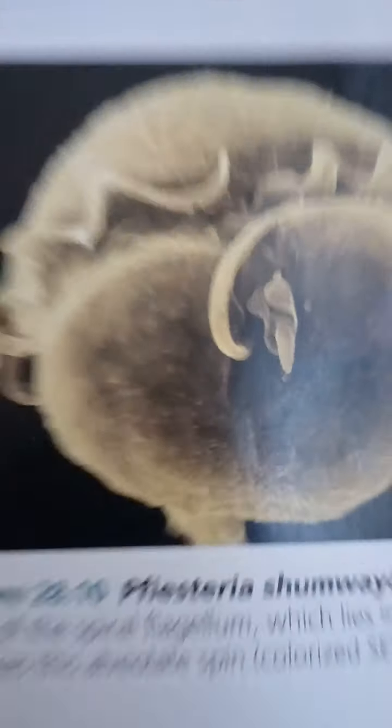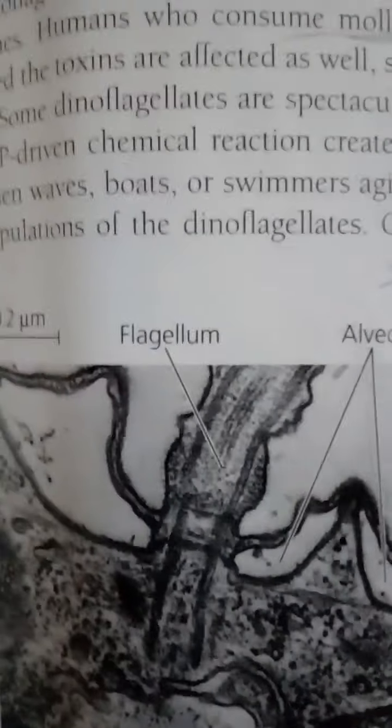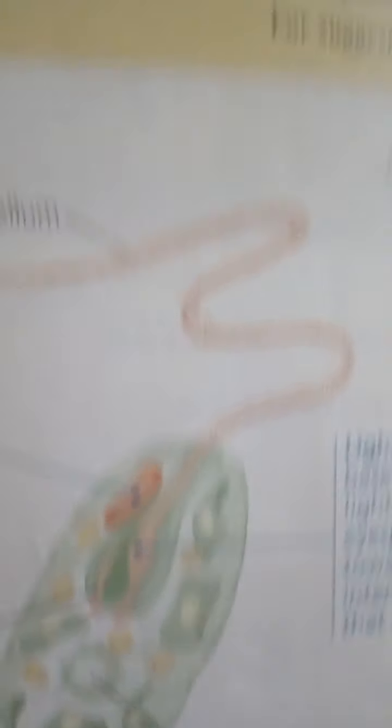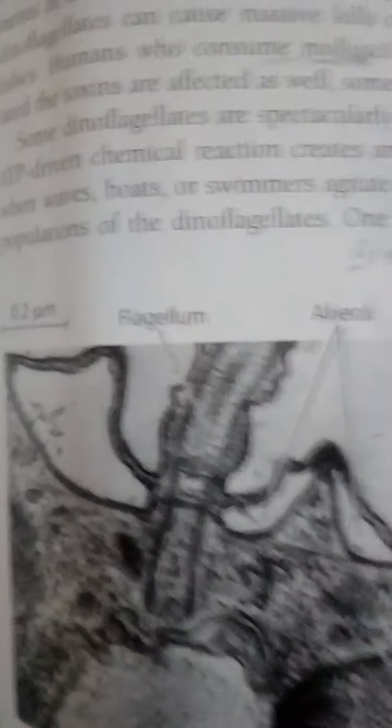Dinoflagellates are abundant components of both marine and freshwater phytoplankton. There are also heterotrophic dinoflagellates. Of the several thousand known dinoflagellate species, most are unicellular but some are colonial. Each has a characteristic shape that in many species is reinforced by internal plates of cellulose. Two flagella located in perpendicular grooves in this armor make dinoflagellates — from the Greek 'dinos,' meaning whirling — spin as they move through the water.